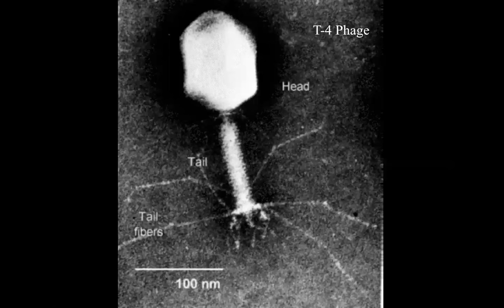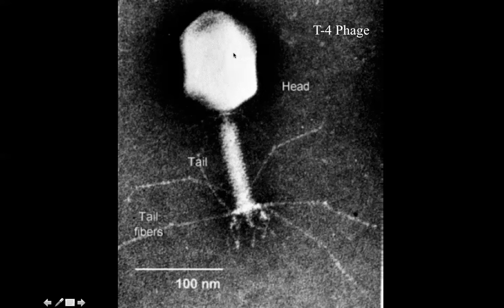Interestingly, restriction enzymes were discovered by scientists who were working with a virus called a bacteriophage. This is an electron micrograph of a bacteriophage called the T4 phage. Phage viruses all have similar structures, generally with a head, a tail, and tail fibers made of protein, and inside the head is where you'll find genetic information.